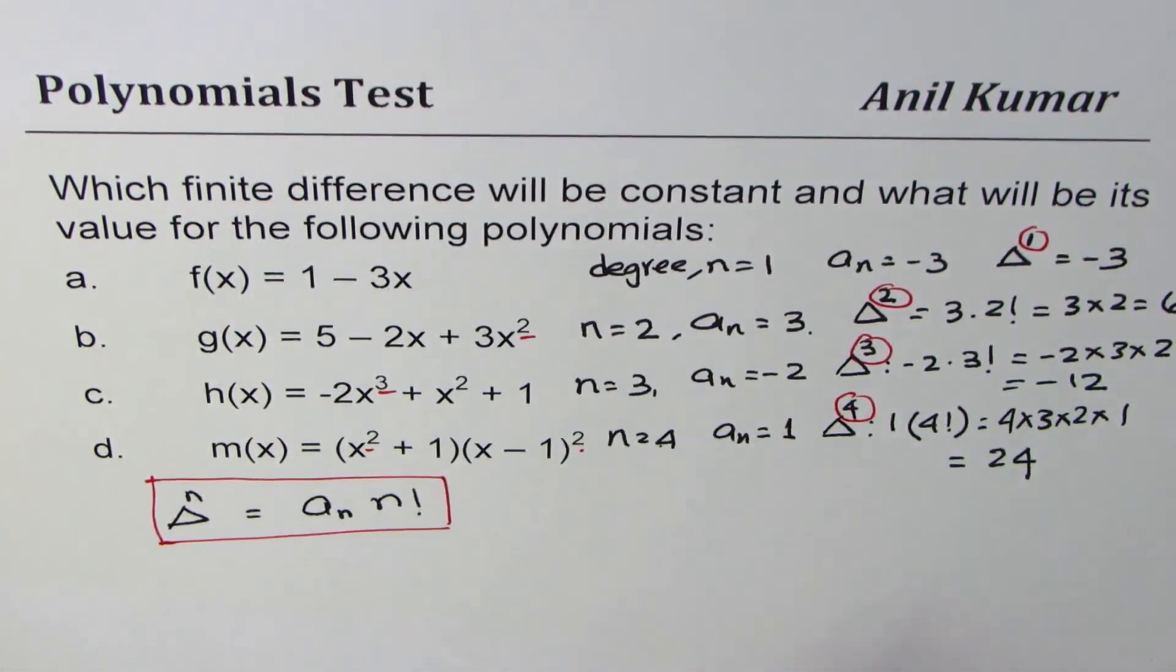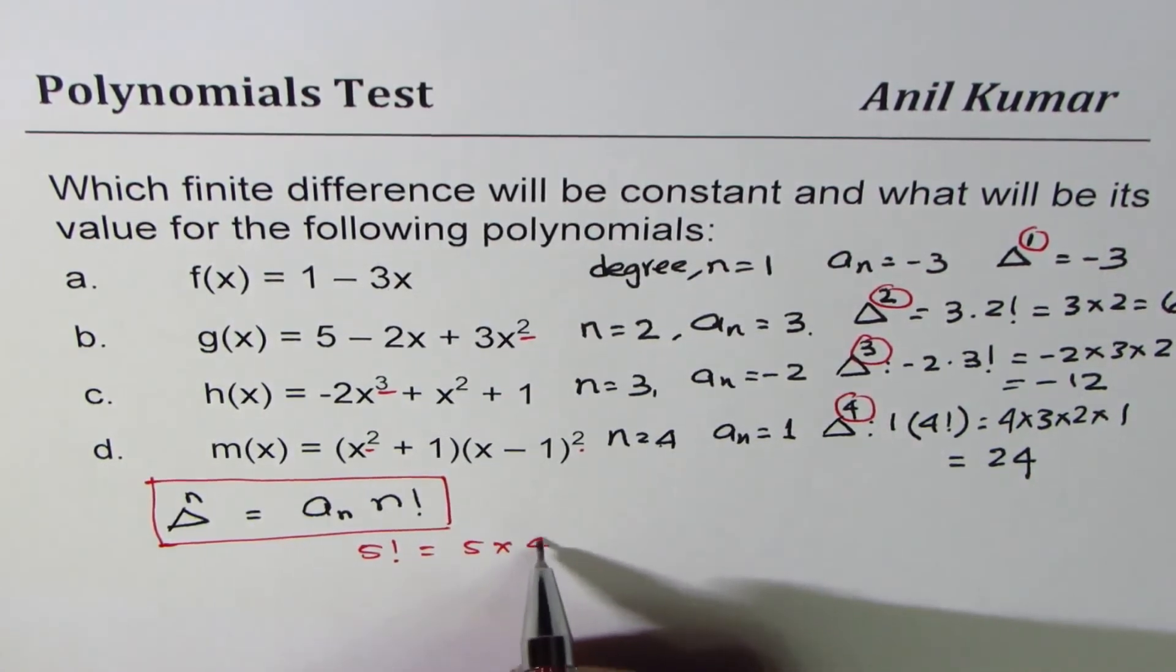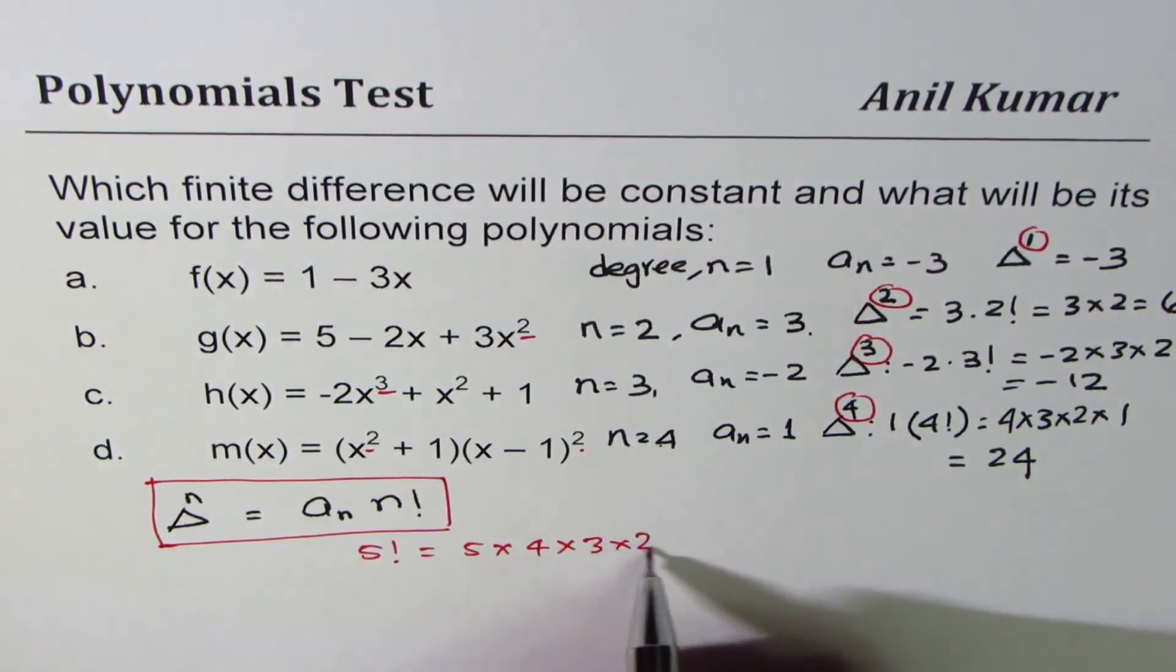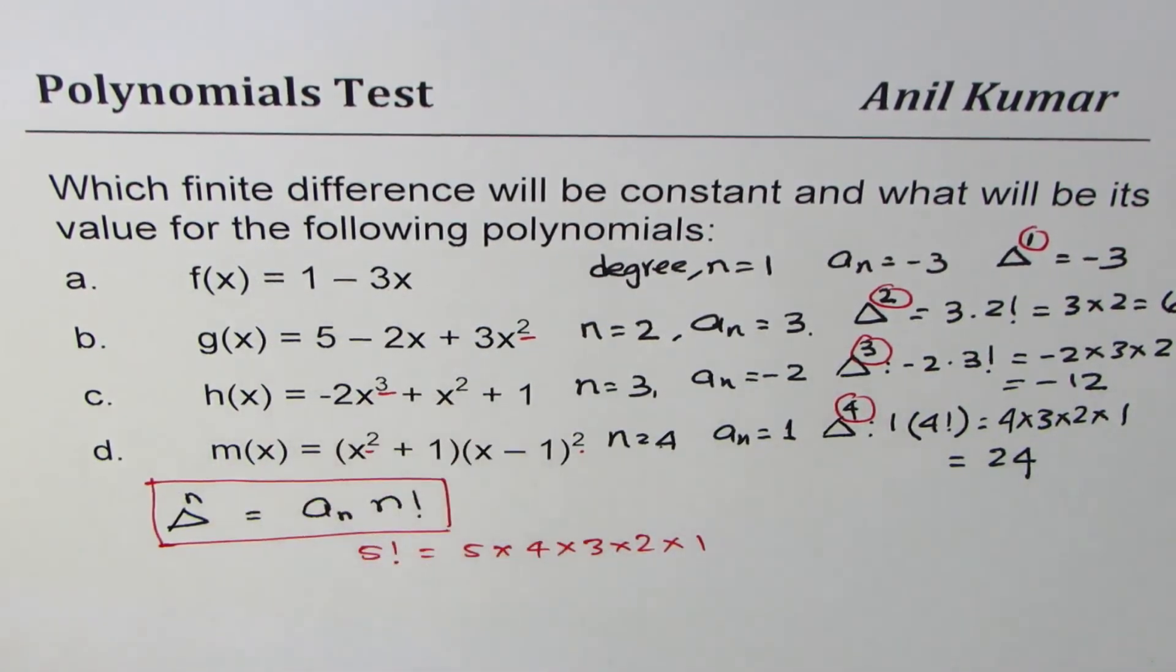And its value is going to be defined by this formula, where n factorial means, if I write 5 factorial, it means 5 times 4 times 3 times 2 times 1.